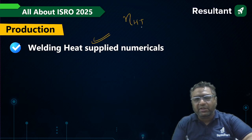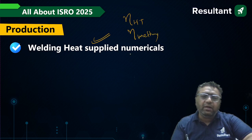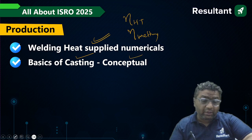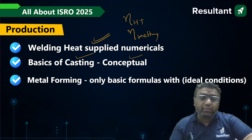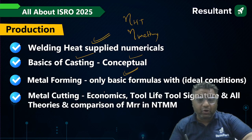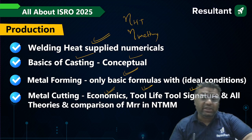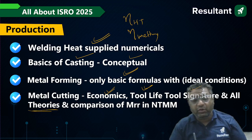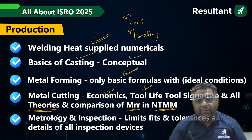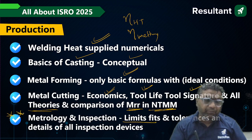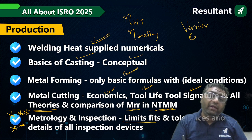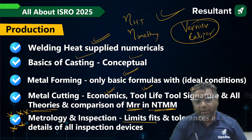For Production, welding heat supply numericals are important — heat transfer efficiency and melting efficiency. Basic concepts of casting are asked, like process properties of sand and metal forming using ideal condition formulas (the real derivation parts are not asked, those are for Engineering Services). In metal cutting, economics is very important, tool life numericals are important, tool signature is very important, and theories like Taylor's and Merchant's are asked. Material removal rate comparisons between processes are asked. Metrology and inspection is the most important topic — specifically vernier caliper and screw gauge, asked many many times.